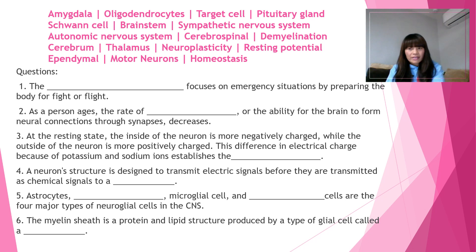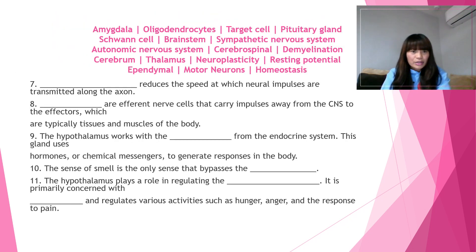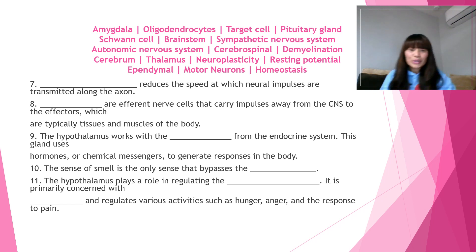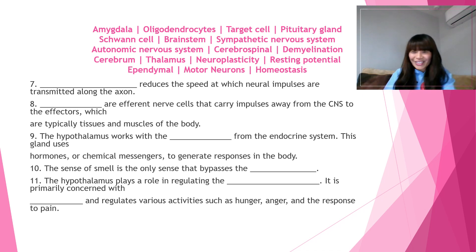Number seven: blank reduces the speed at which neural impulses are transmitted along the axon. The answer is demyelination. Demyelination reduces the speed at which neural impulses are transmitted along the axon. You can go ahead and write the sentences as I read, or pause the video to write everything down and have your own notes.